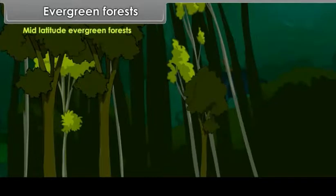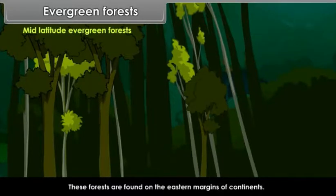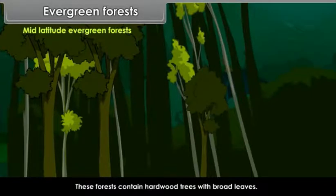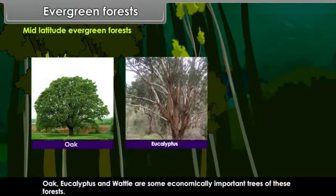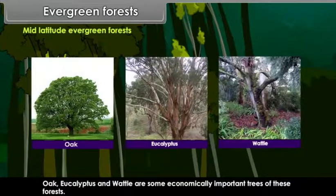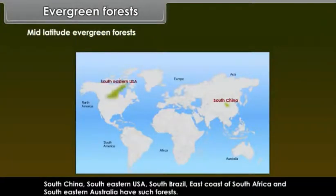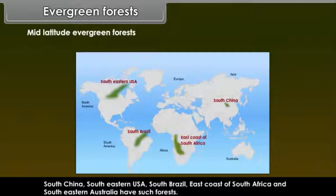Mid-latitude evergreen forests: These forests are found on the eastern margins of continents. They contain hardwood trees with broad leaves. Oak, eucalyptus and wattle are some economically important trees of these forests. South China, southeastern USA, south Brazil, east coast of South Africa and southeastern Australia have such forests.